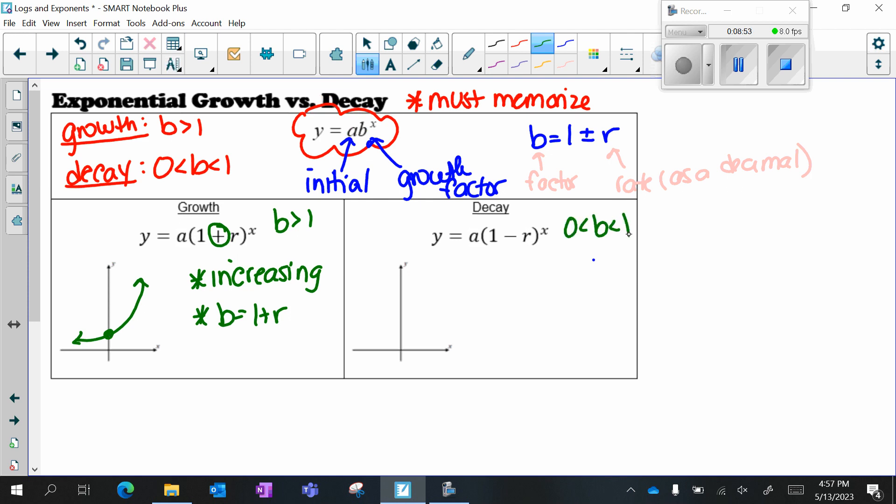For decay, B is between 0 and 1. My graph is decreasing. B is equal to 1 minus R, it's subtraction. And key words that you're going to look for are loses value, decreases, or depreciates. Those are key words in a word problem that tell us that it's decay, or of course if they say decaying.